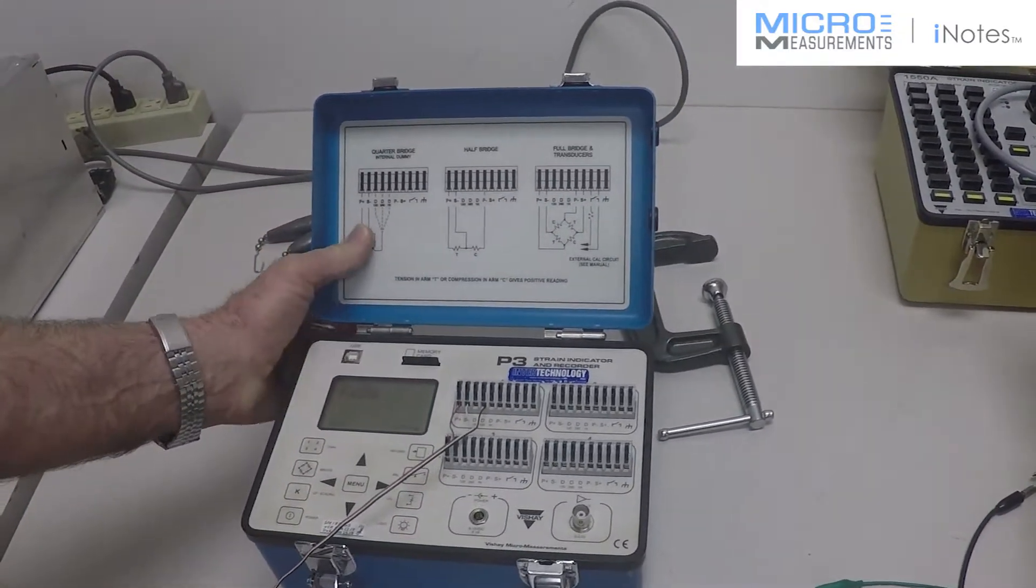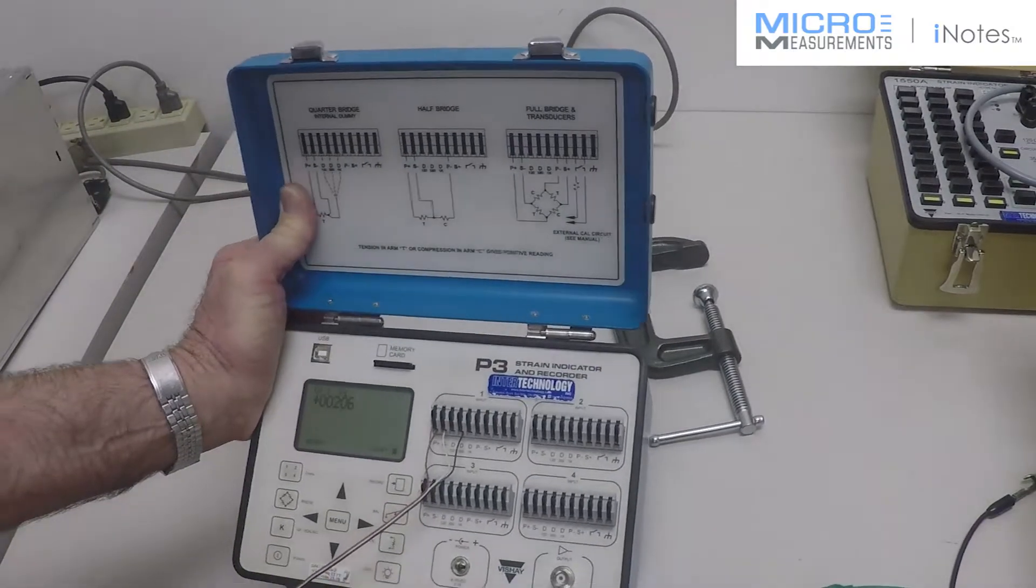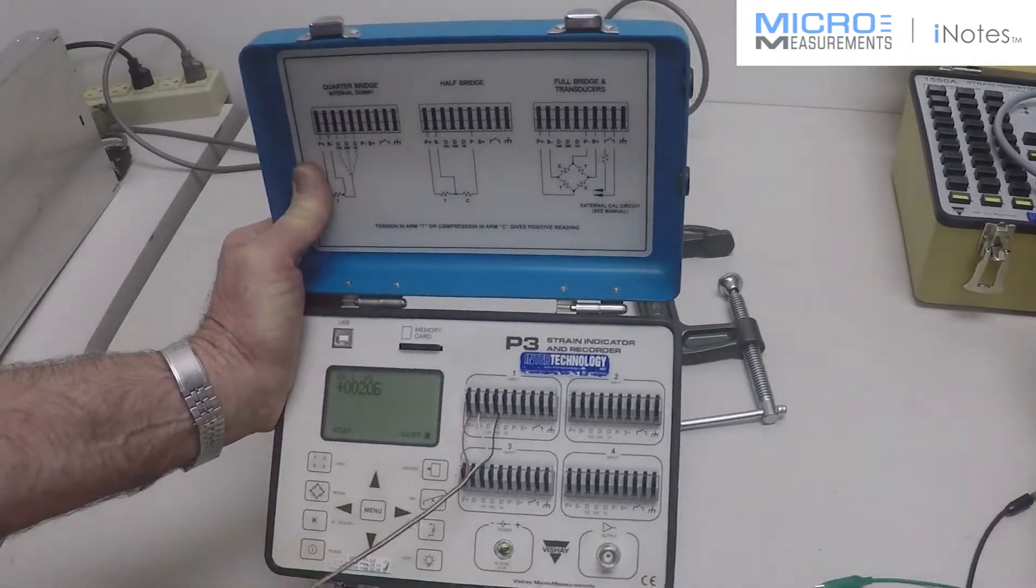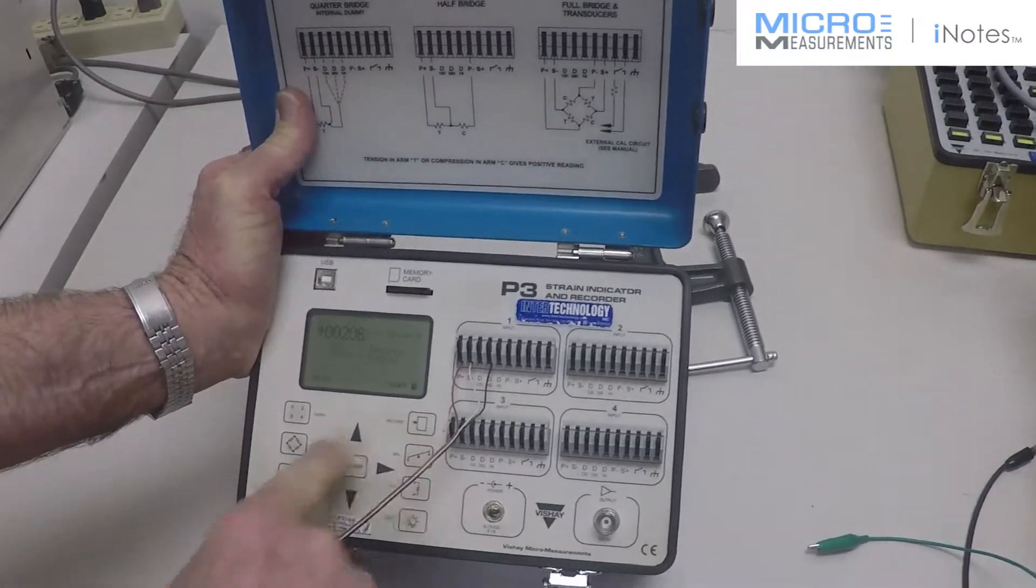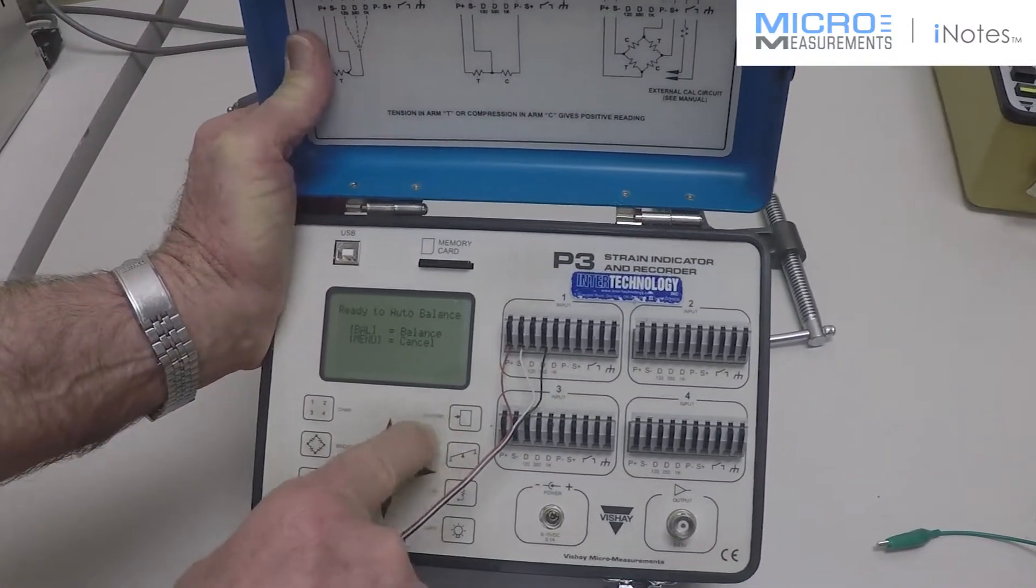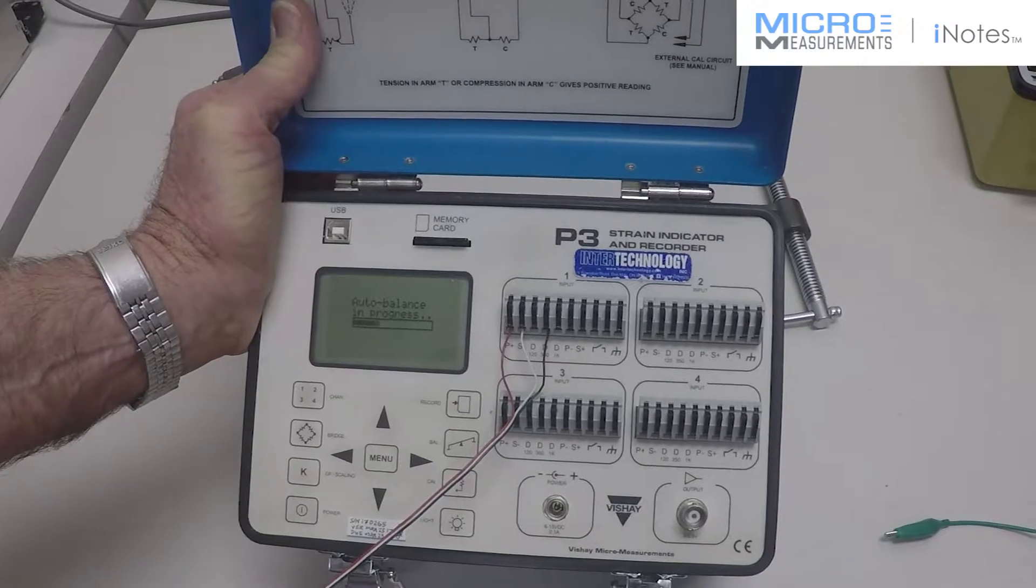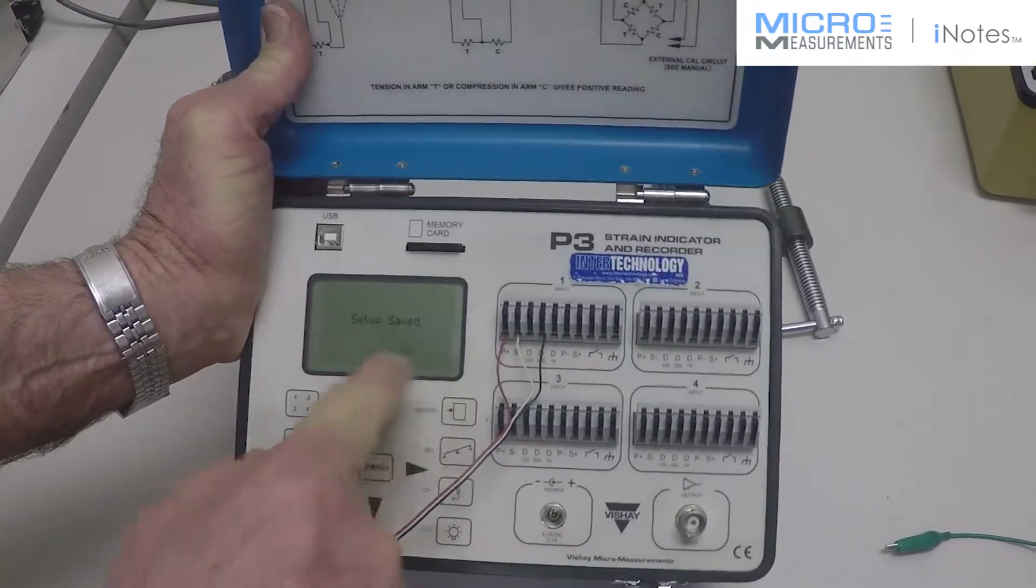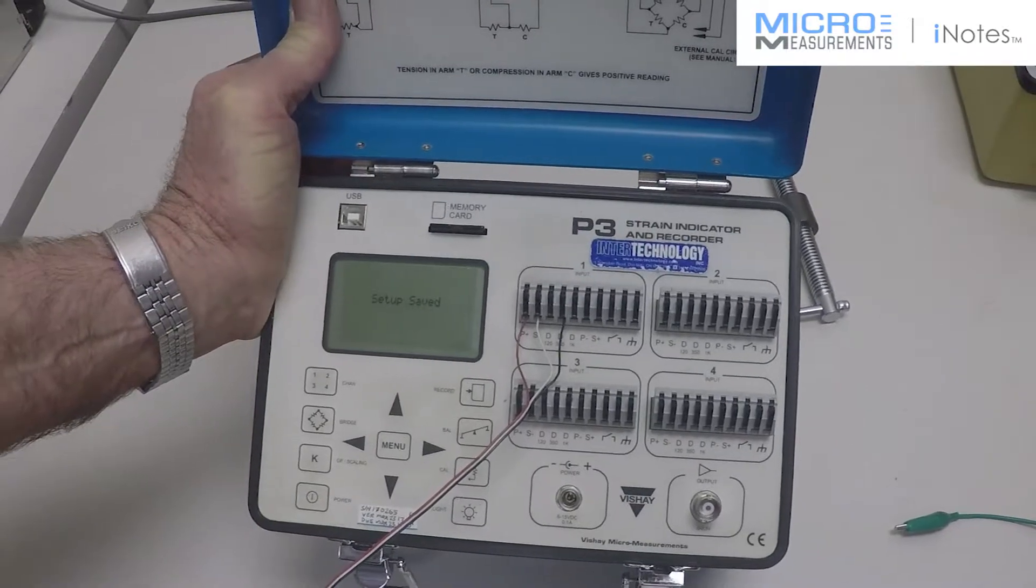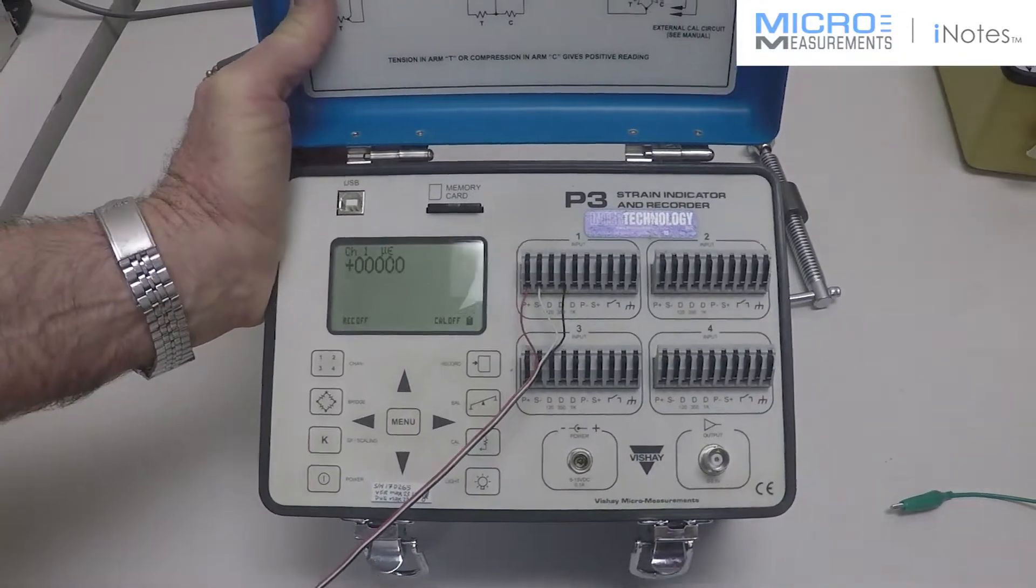We also have, very importantly, the ability to balance the bridge to zero with no load on it. So we're going to press balance over here, and we press balance again it'll automatically balance, and I will save the setup and the balance condition, and we end up with a zero count.